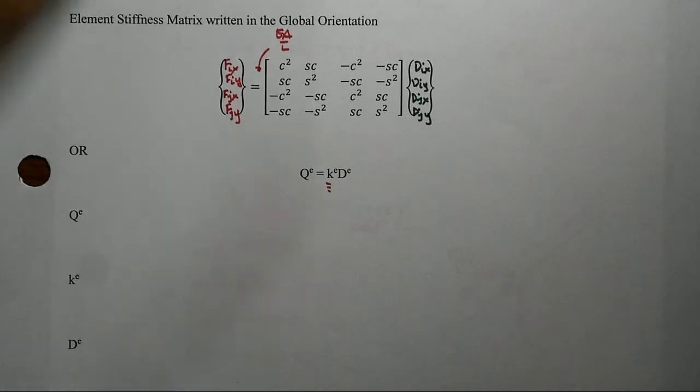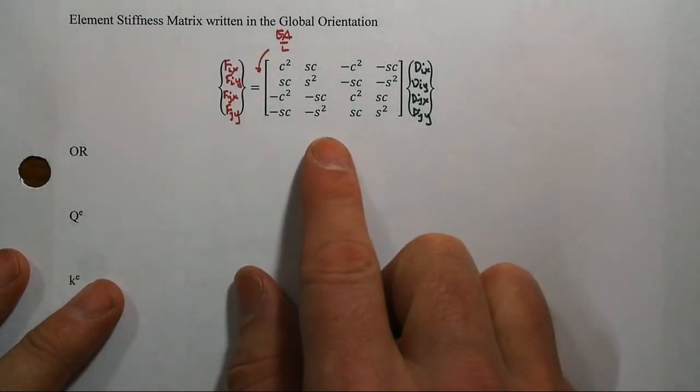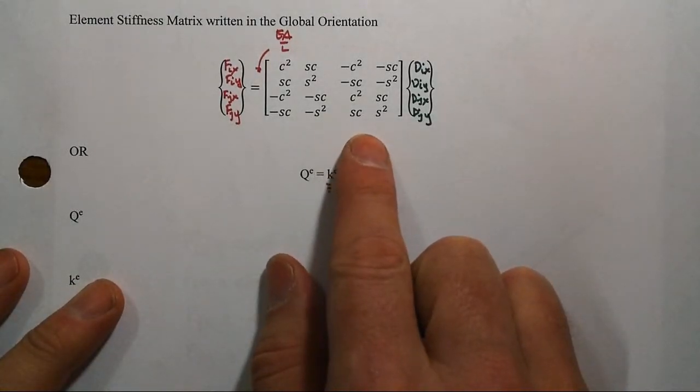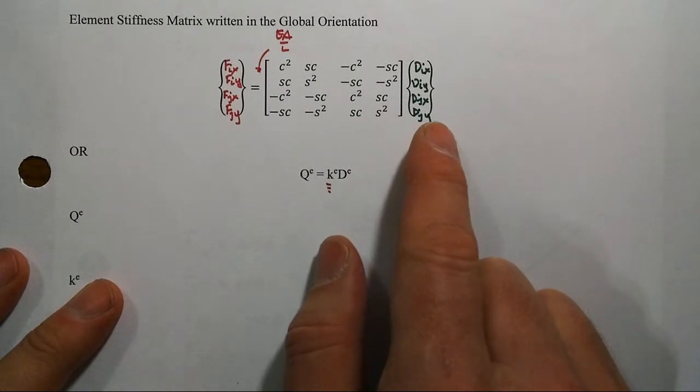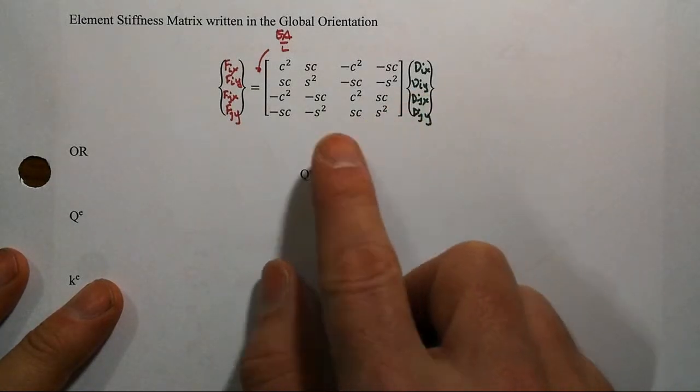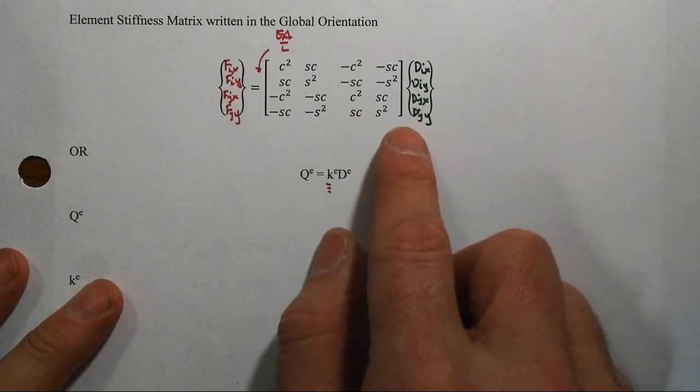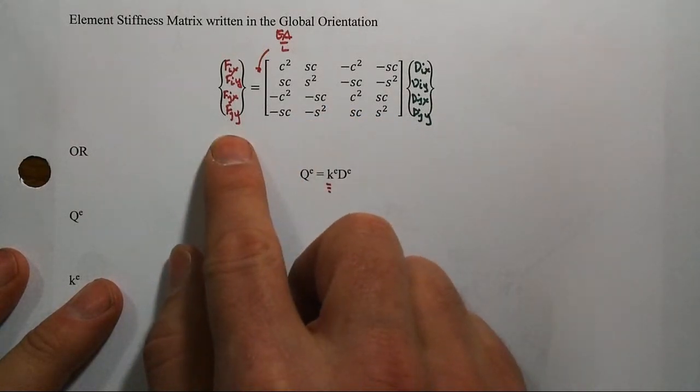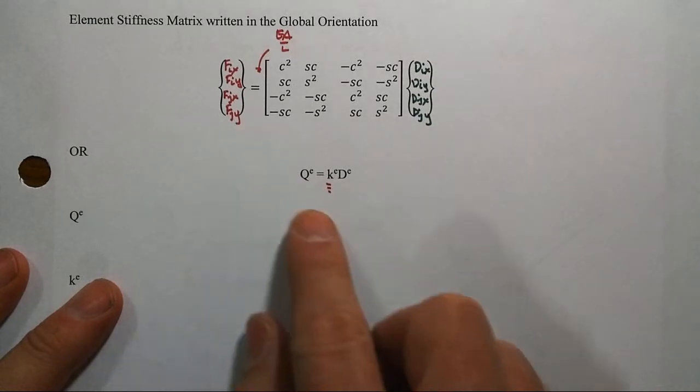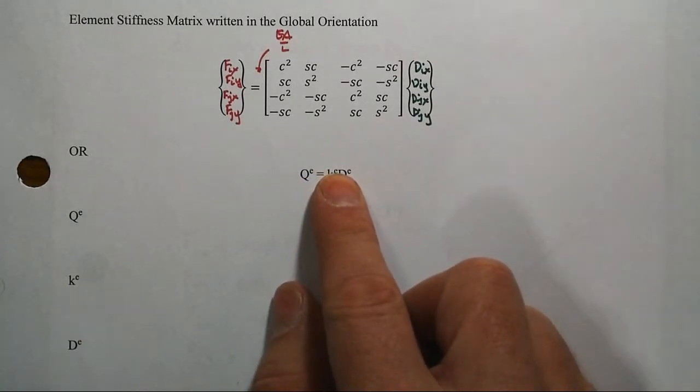We went through a lot of work to come up with this general element stiffness matrix for the truss that was associated with the global orientation. So these were global displacements and this transformation then got us what was happening on the ends of the truss member in the global orientation leaving us this big thing.